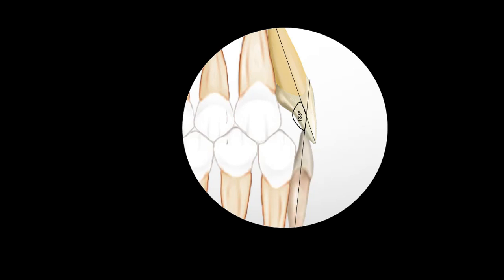Now, in some cases like class 2 division 1, this angulation is disturbed, and there is excessive proclination of upper incisor, which results in excessive overjet. Here, you can see that lower incisors are free to erupt till they come in contact with the lingual surface of the upper incisors. This will result in excessive overbite as well.